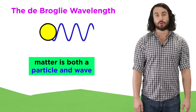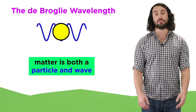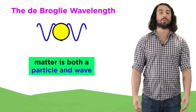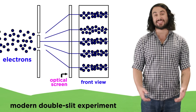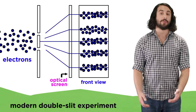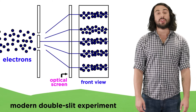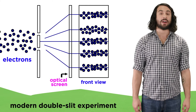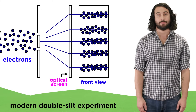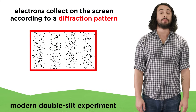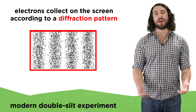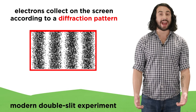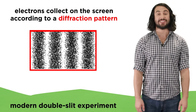Later, de Broglie proposed that particles must therefore also display wave-like behavior, and this was shown to be true in an experiment just like Young's more than a hundred years prior. This modern version is what we are typically referring to when we talk about the double-slit experiment. From this, it was shown that a beam of electrons exhibits diffraction and interference patterns, just like light does.